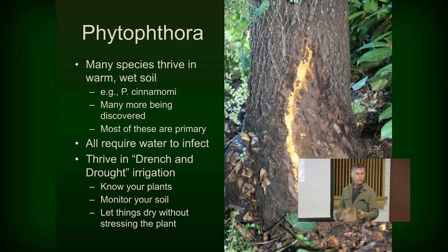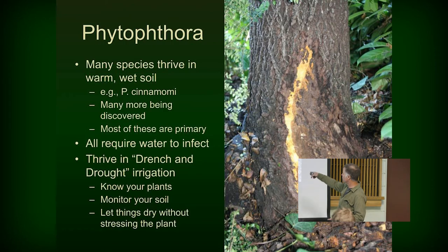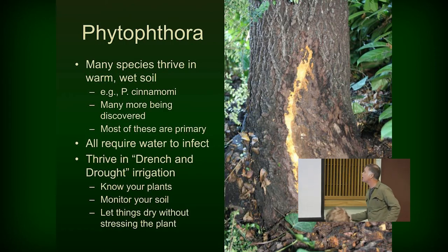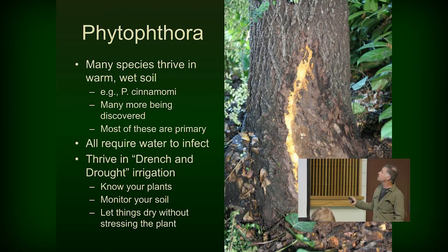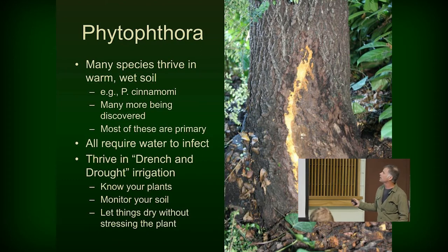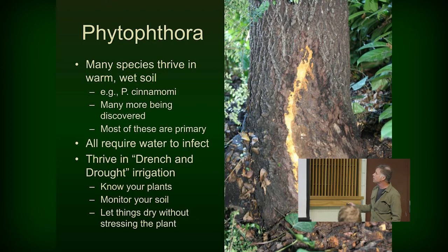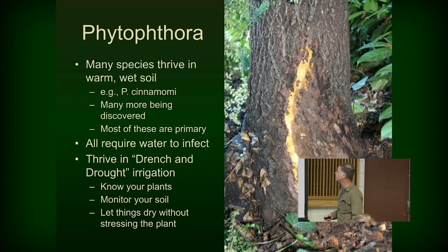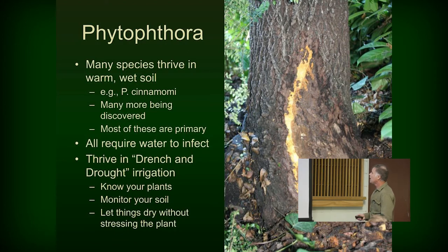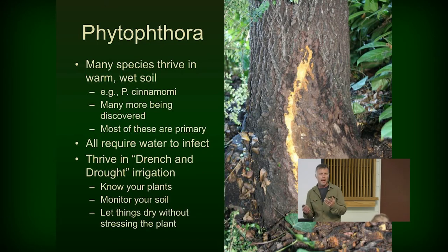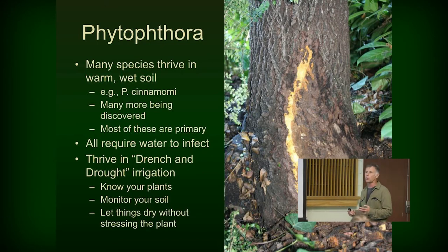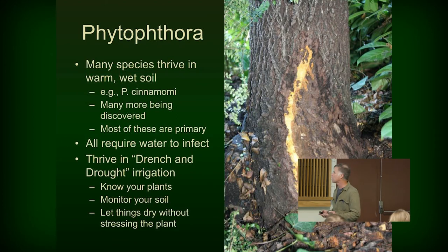Suffice it to say that if you've got a soil-borne Phytophthora, it usually works its way up. This is walnut — you start higher and work down. The color of the healthy tissue is a sort of orange gold. You will not find fungal structures like white mycelial mats because Phytophthoras are all microscopic. Most of these are primary pathogens — a lot of plants don't have inherent resistance. They all require free water to infect, so it's not just moist soil — they need water free enough to begin to flow.